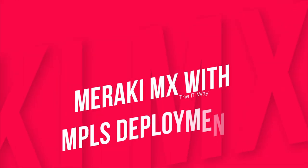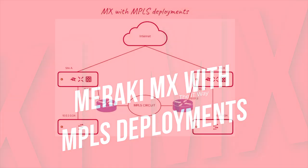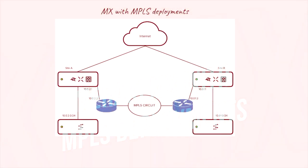Now in this video, we're going to go a little bit deeper into the MX deployment with MPLS. This is going to be a little bit tricky because we can see the MPLS most of the time in the LAN network, and then we're going to use a static route to communicate between sites.